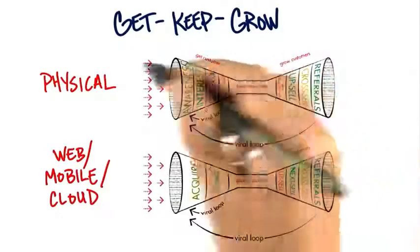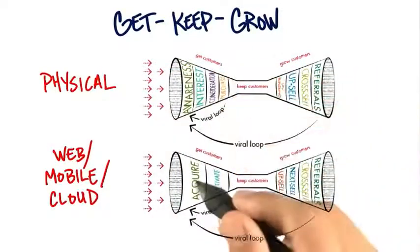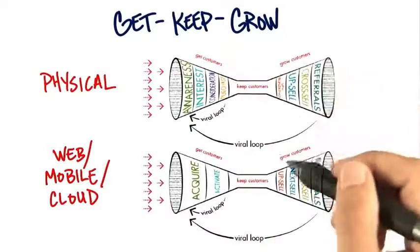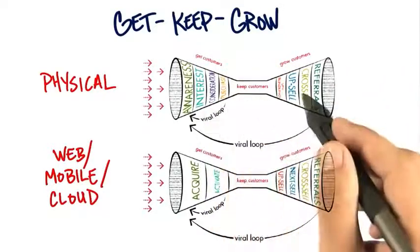Just know that the physical representation of the customer lifecycle, get, keep, and grow is kind of this double-barreled funnel, and that's why we draw it this way. It just allows you to understand how do customers get into our company, how do we get them, how do we keep them, and how do we grow them.